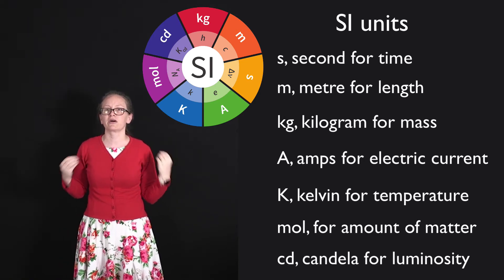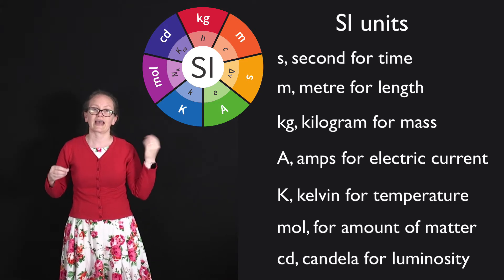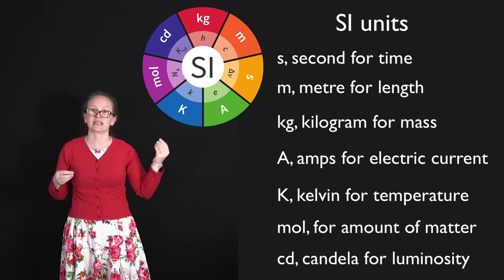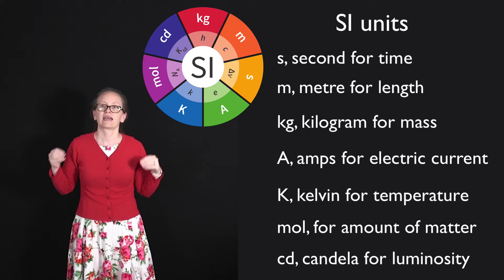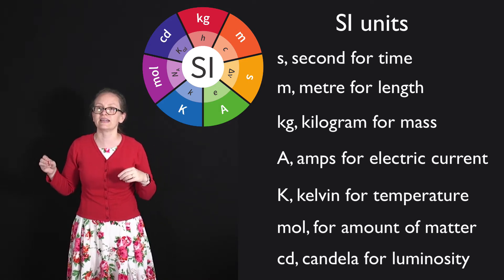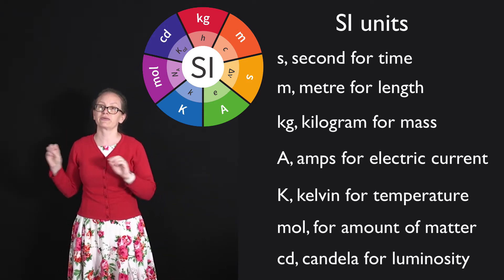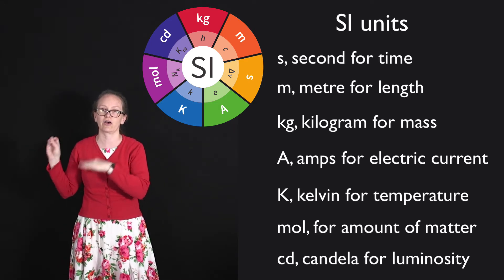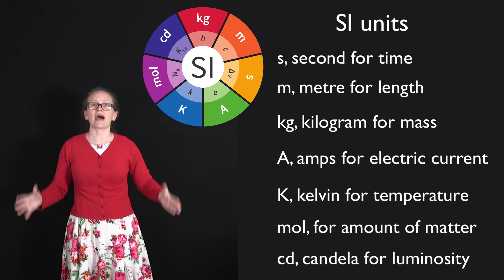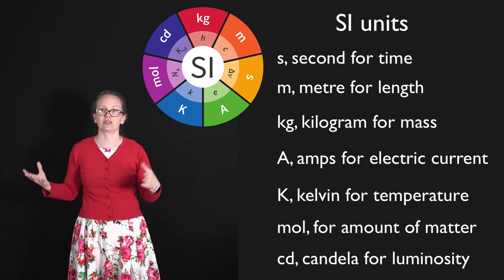And then the one which you're possibly less familiar with is for luminosity. We've got candela, which has the symbol CD, and candela is actually short for candle power. This is luminous intensity in a given direction of a source that emits monochromatic radiation at a frequency of 540 times 10 to the 12 hertz. So all other units are combinations of these seven units.